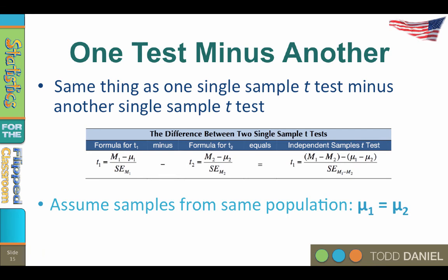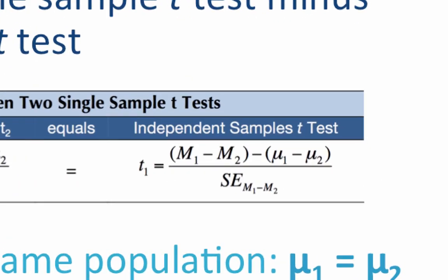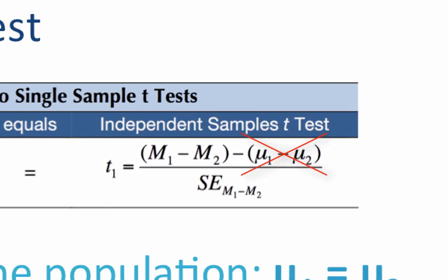So what if we subtract two values that are equal? If we assume that mu 1 equals mu 2, as is stated by our null hypothesis, then mu 1 minus mu 2 would equal 0. Therefore, the value mu 1 minus mu 2 in the numerator equals 0, and so can be ignored. The numerator will include only mean 1 minus mean 2.